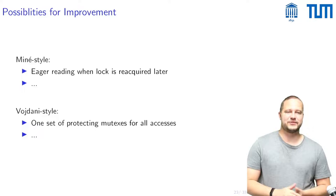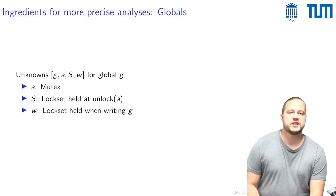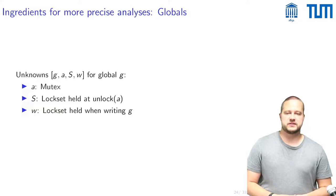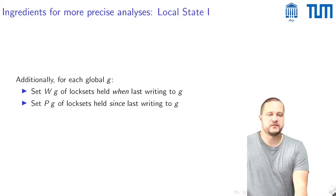To achieve this we give some ingredients for more precise analyses. The first thing is that for globals on top of this g, a and s that we already used for the side effecting formulation of Miné's analysis one can also track this lock set w there that is the lock set that is held when one writes g. And in the local state one can additionally track some information for each global.